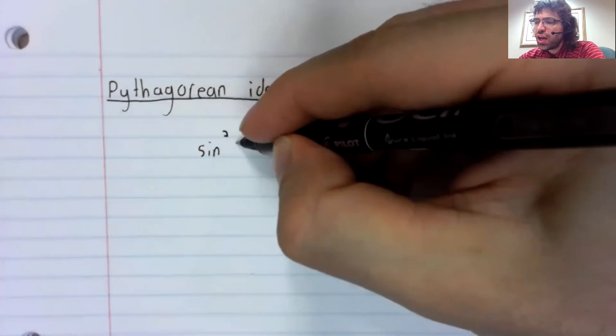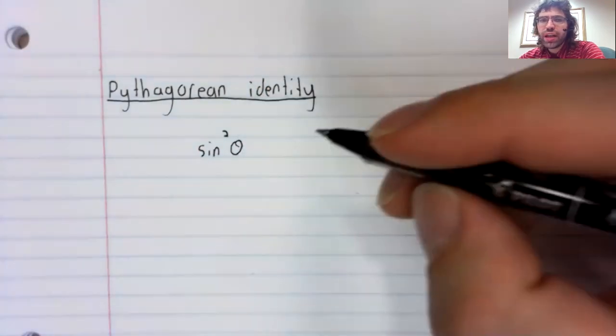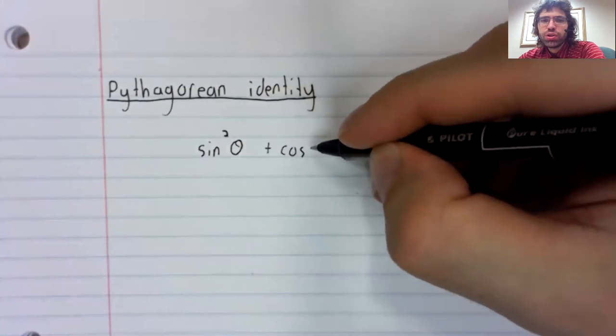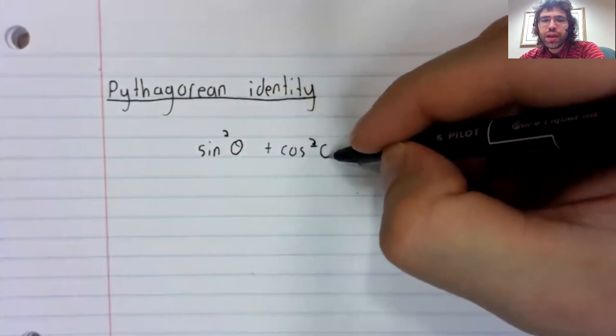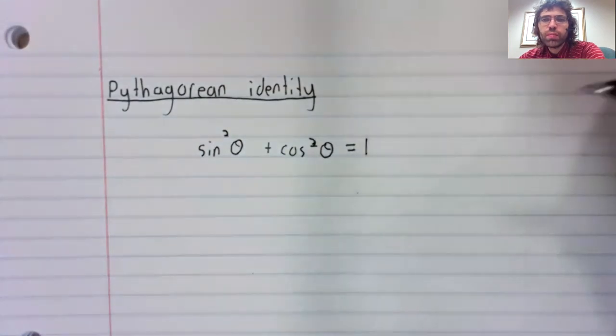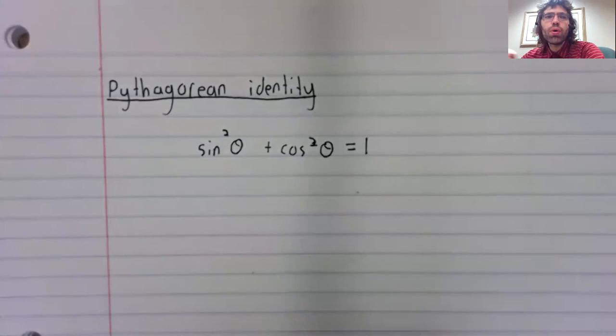And the Pythagorean identity says that the sine squared of an angle plus the cosine squared of an angle equals 1.